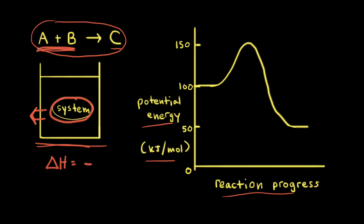Our reactants, which are A and B, have a certain amount of potential energy — that's shown here on our energy profile, representing the energy of our reactants. Our reactants react together to form our product, which is C, and that's at the very end. So over here, this line represents the potential energy of our products.